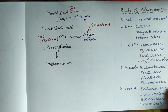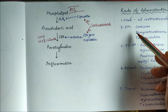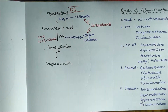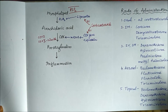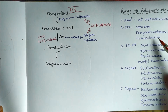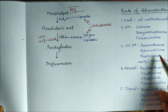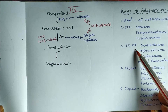Corticosteroids can be given by all routes: oral, intramuscular, intravenous, aerosol, and topical ointments. All corticosteroids can be used orally. Some — like cortisone, deoxycorticosterone, and triamcinolone — can be used intramuscularly. Dexamethasone, hydrocortisone, prednisone, prednisolone, and methylprednisolone can be used both intravenously and intramuscularly.